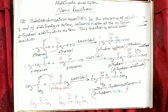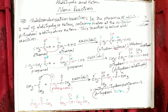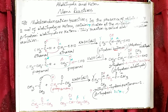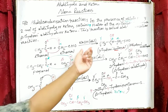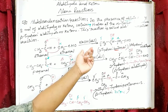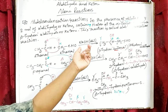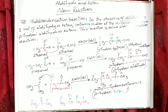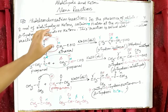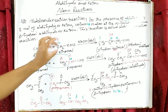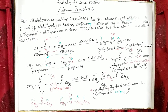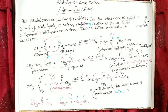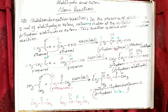The conditions of aldol condensation reaction: first, the reaction must occur in the presence of dilute base like sodium hydroxide or potassium hydroxide; and second, there must be a hydrogen atom at the alpha carbon. Those are the major conditions of aldol condensation reaction.